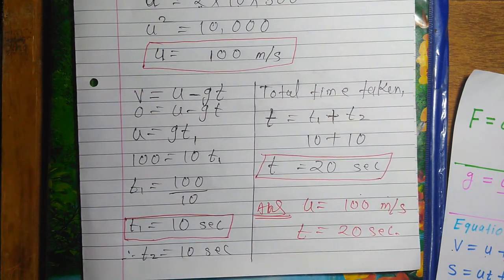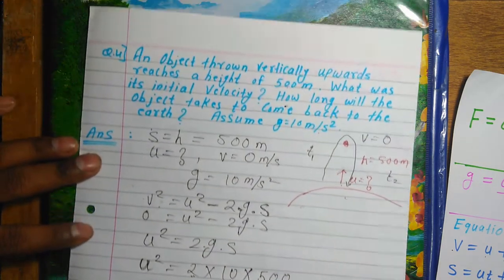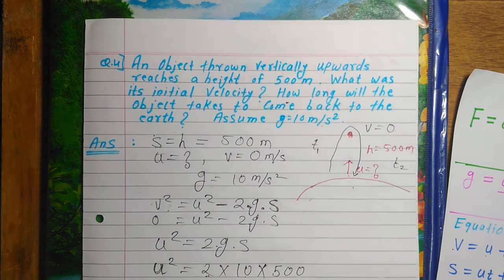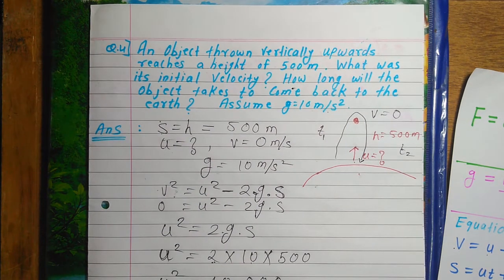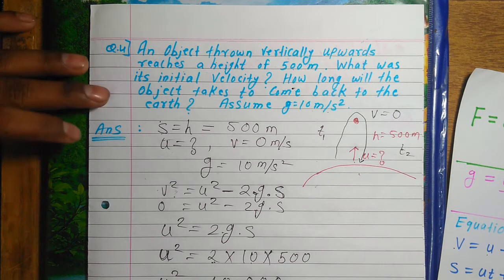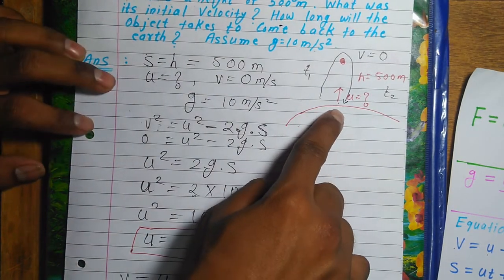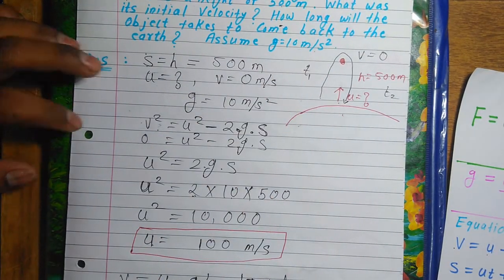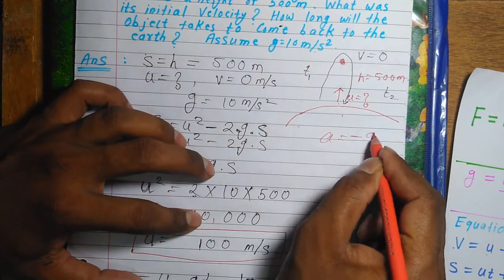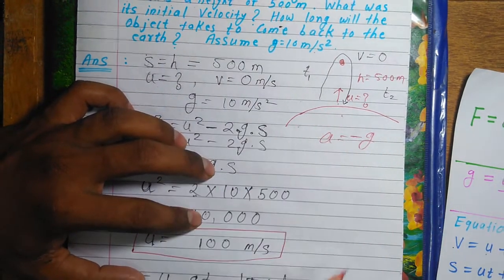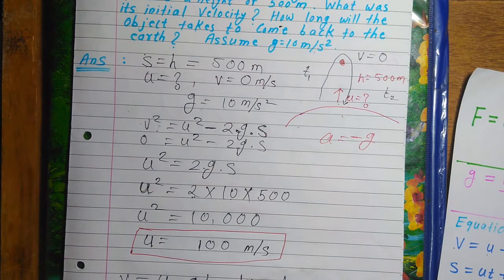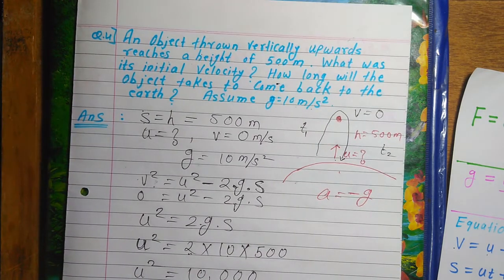This problem is now solved. We had an object going upward, so we took acceleration as −g. Problem solved using kinematic equations. Initial velocity is 100 m/s, and total time to come back is 20 seconds. Such problems can be solved using kinematic equations.